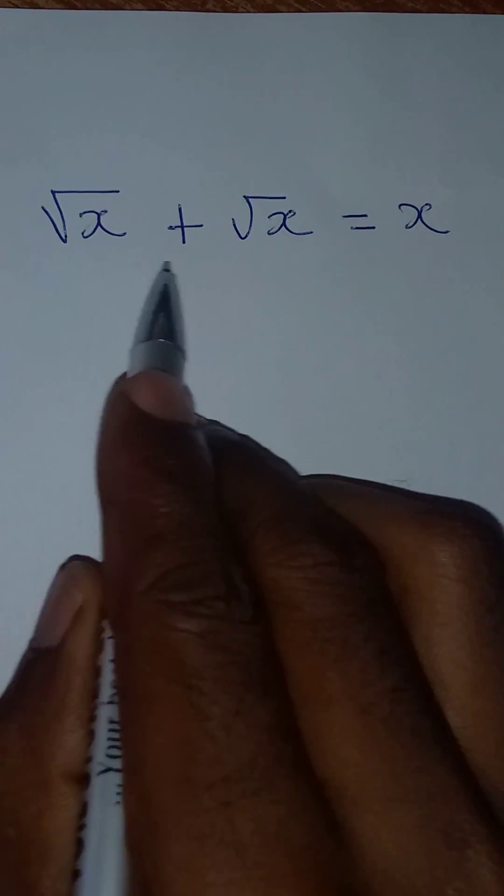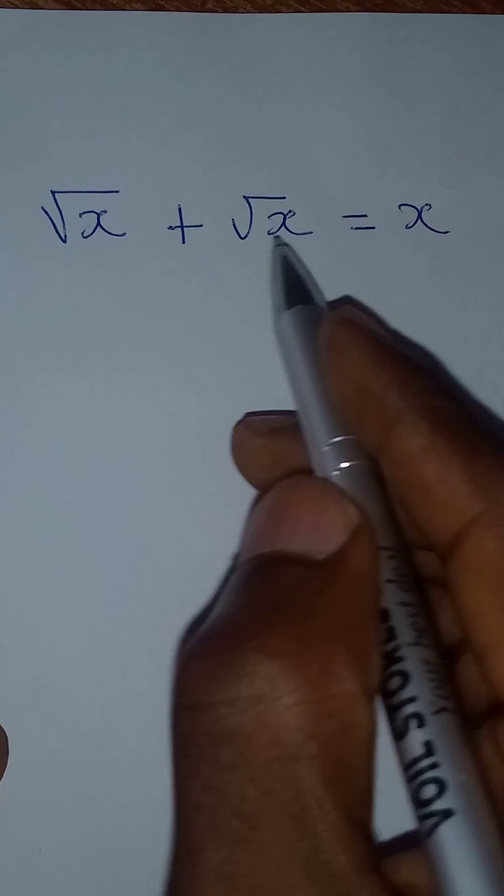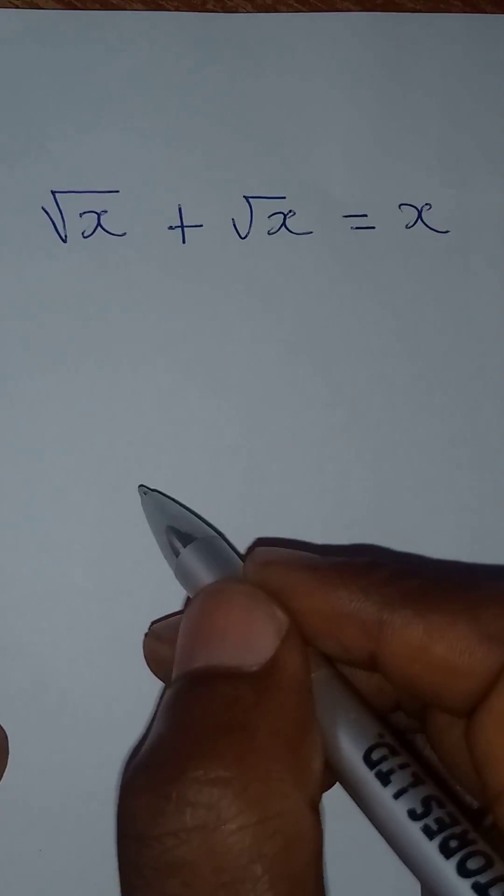Hello everyone. Let's solve this problem very quickly. We have square root of x plus square root of x equal to x.